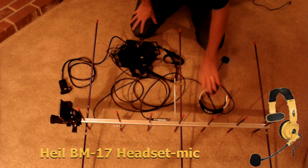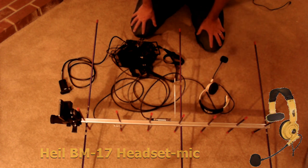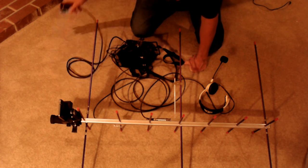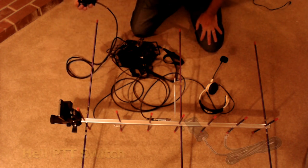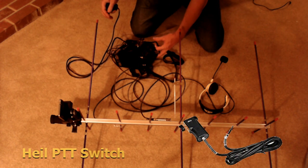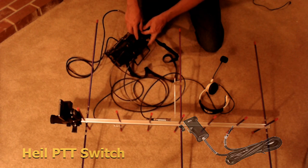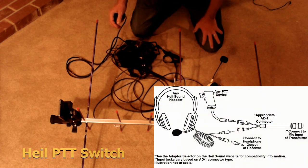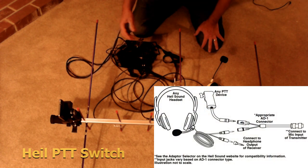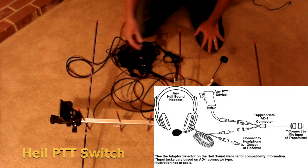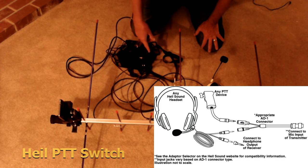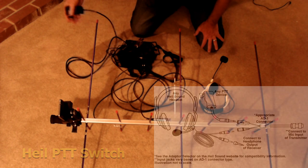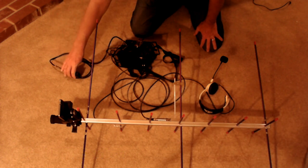Another component that's a companion for the headset is a Heil push-to-talk switch. When you're operating linear satellites, you're switching frequencies as you go along. You're going to hold the antenna with one hand and switch frequencies and push-to-talk with the same hand, so you can spin the dial and push-to-talk simultaneously.